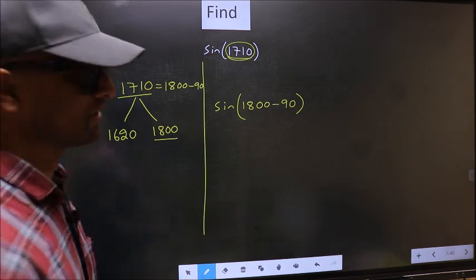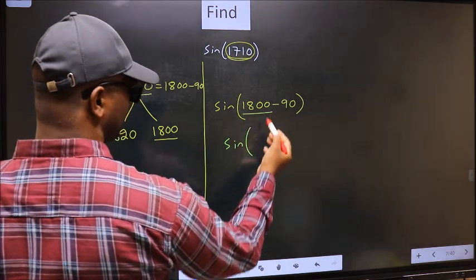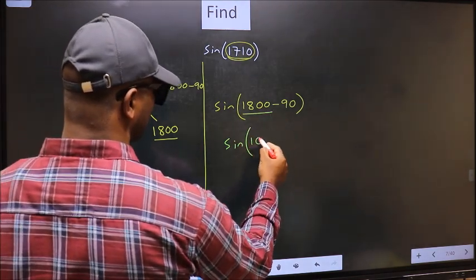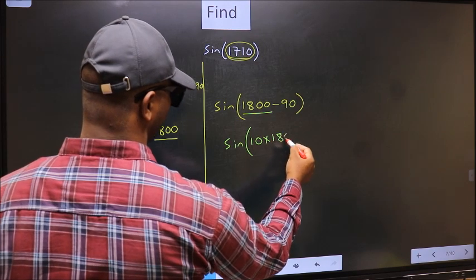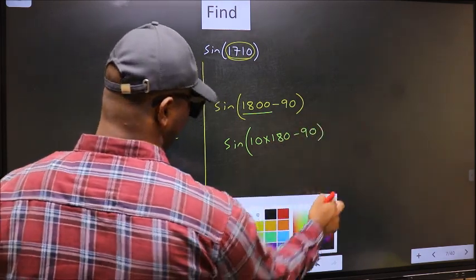Sign. In place of 1800, now we should write 10 into 180 minus 90.